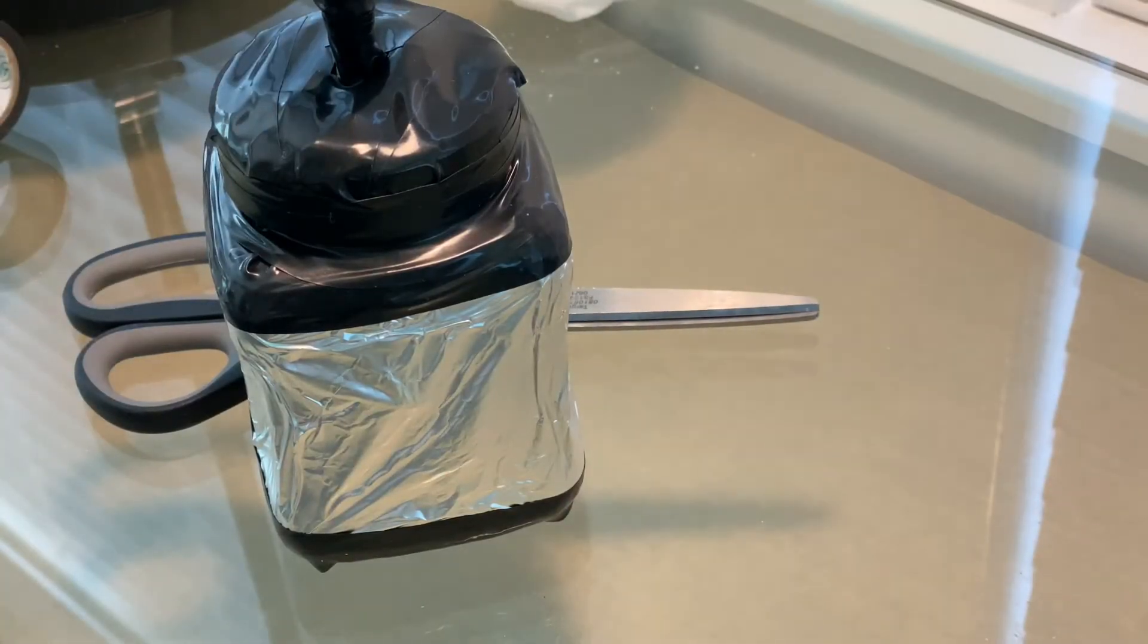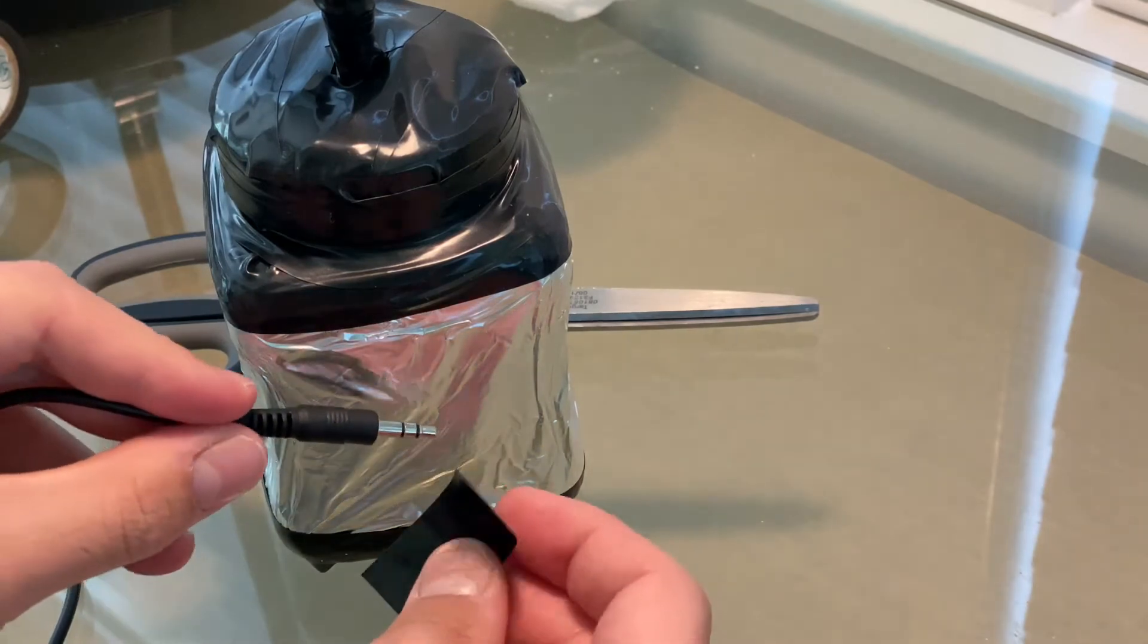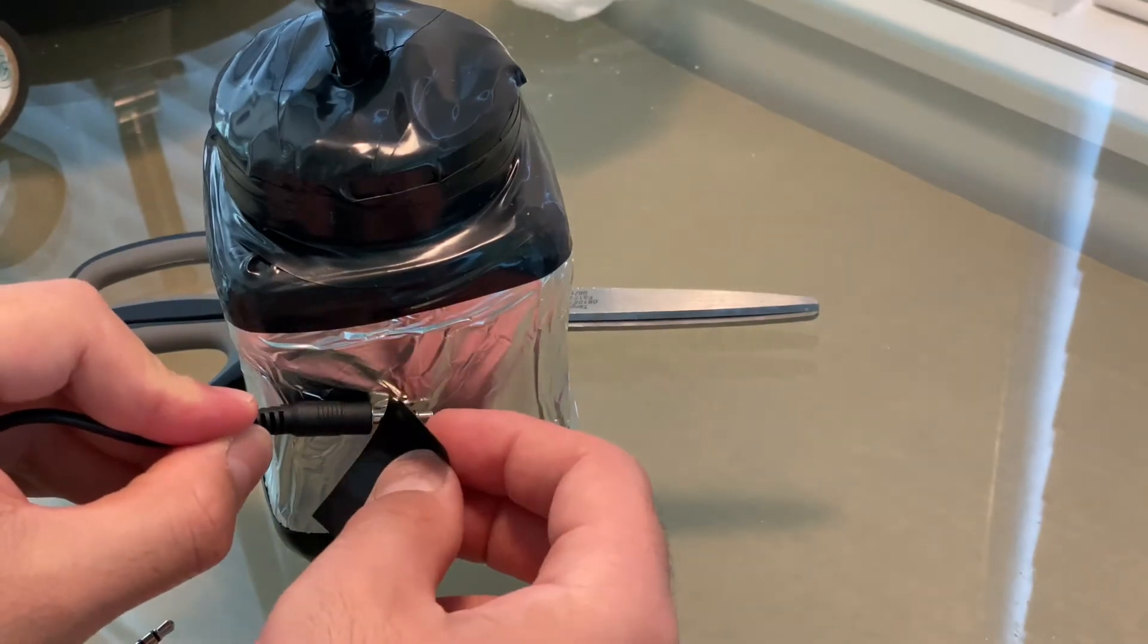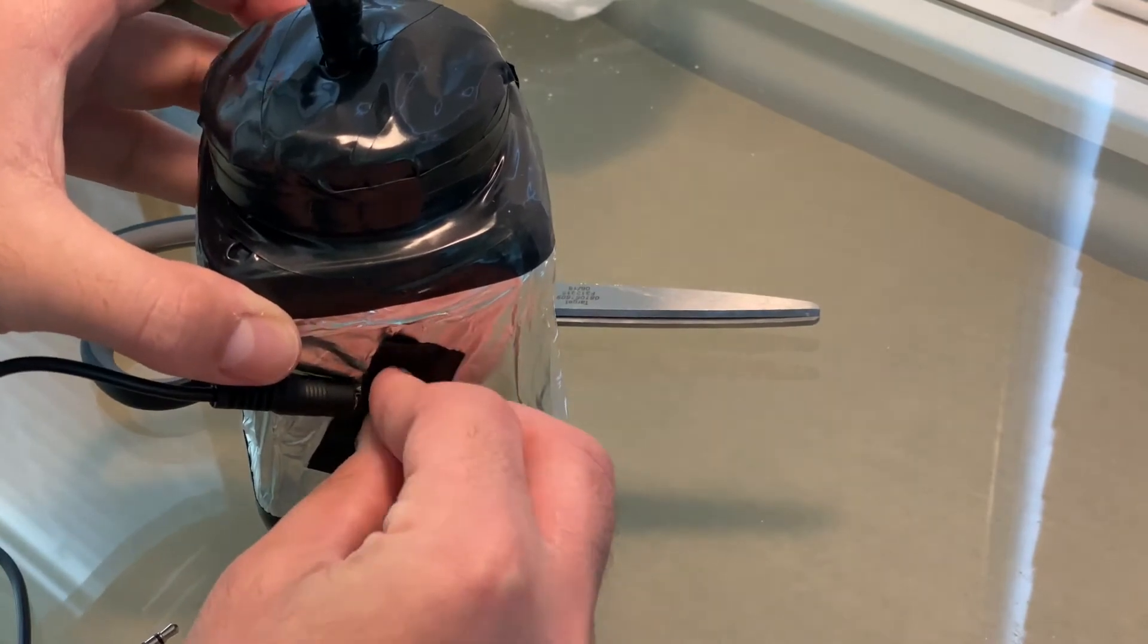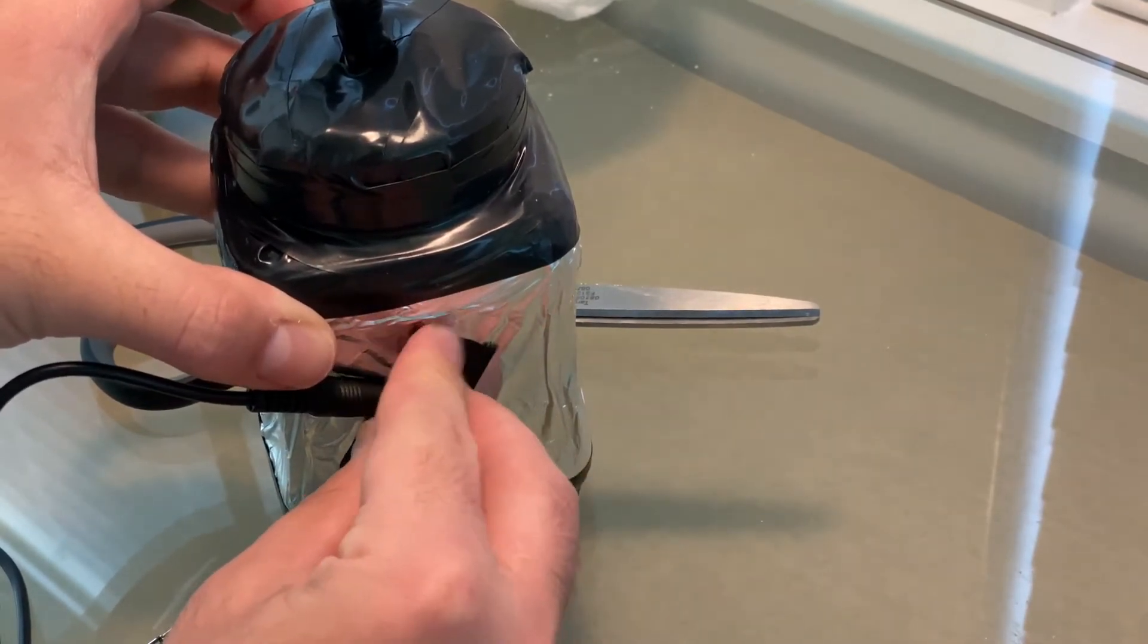So I recommend getting an aux jack just like this one, putting it on the aluminum foil and taping it to hold it in place just like this. You want to make sure the tip of the aux jack is touching the aluminum foil.